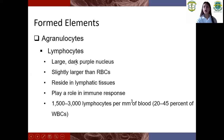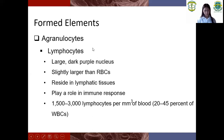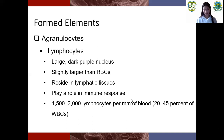So lymphocytes have a large dark purple nucleus, are slightly larger than red blood cells, reside in lymphatic tissues, play a role in immune response. Normal range is 1,500 to 3,000 lymphocytes. Lymphocytes have a large dark purple nucleus that occupies most of the cell volume.